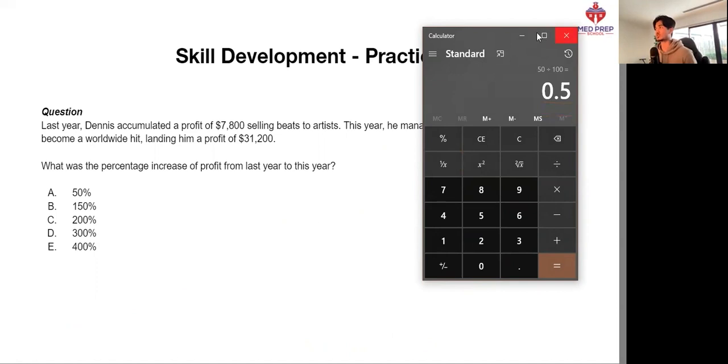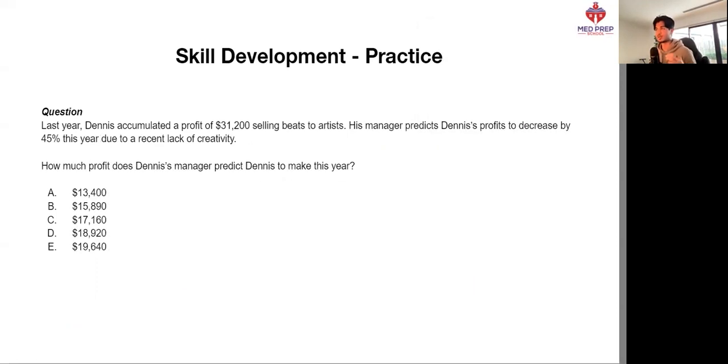So then, moving on to our next question here. Last year, Dennis accumulated a profit of 31,200 selling beats to his artists. So now we're in the next year. His manager predicts Dennis' profits to decrease by 45% this year due to a lack of creativity. How much profit does Dennis' manager predict Dennis to make this year? So hopefully, if we are comfortable with our percentages, we realize that there's a 45% decrease in profits. We are predicting his profits to be 55% of what they were. His profits this year are going to be 55% of what they were.